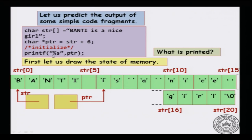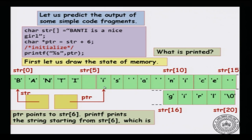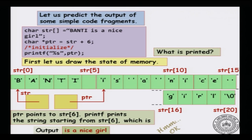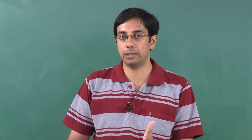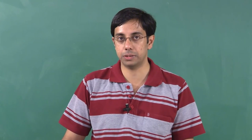What will happen with the printf statement? If I say printf("%s", ptr), ptr points to str[6]. Printf will print whatever string starts from that location until the first null character. It will start printing from that character and go on printing until it reaches the null. So the output will be "is a nice girl". You can start from an arbitrary location and printf with %s will print until the first null character.